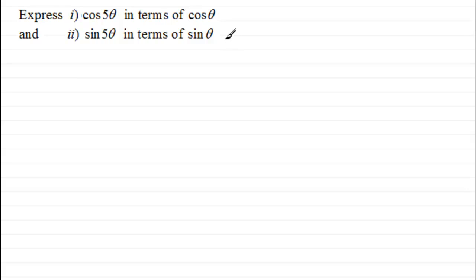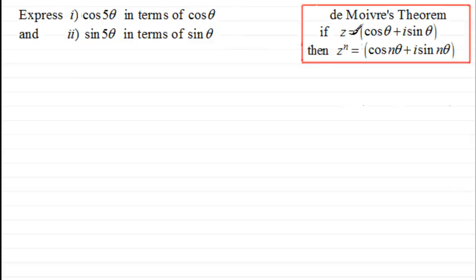Okay, welcome back if you had a go. Now do you remember I showed you that if you had z = cos(θ) + i·sin(θ), then by De Moivre's Theorem z^n was equal to cos(nθ) + i·sin(nθ).